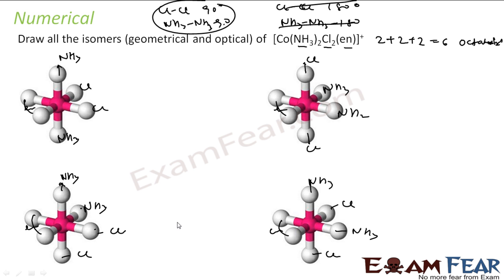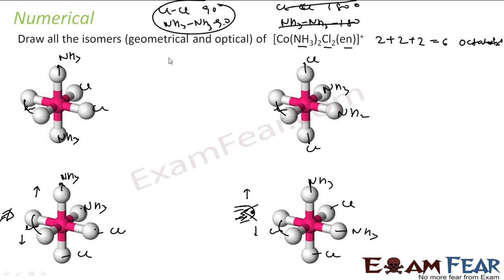Let's view these two structures from specific angles to check if they are different. On the top we have NS3 in both cases. On the left we have NS3 and on the right chlorine in one case; on the left chlorine and right NS3 in the other — they are different. So they are also geometrical isomers. We have four geometrical isomers in total.